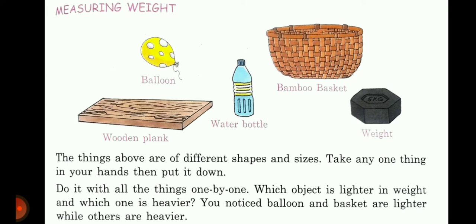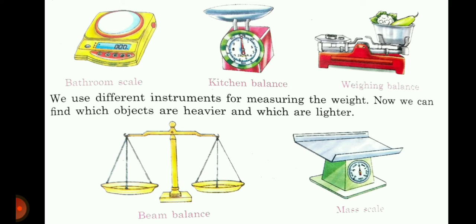Now we will measure things with weight. All these things have different shapes and sizes. By looking we can get an idea of the size of an object. Take one thing in your hand, then put it down, then take another and put it down — do this with all things one by one. You will notice that some objects are lighter in weight and some are heavier.